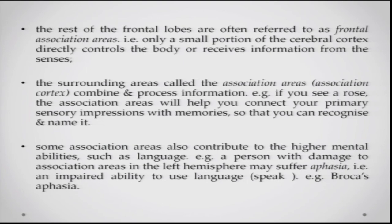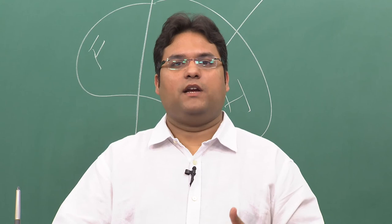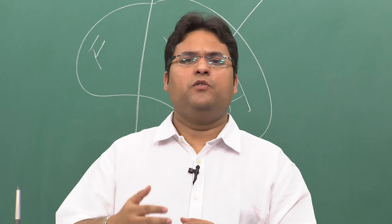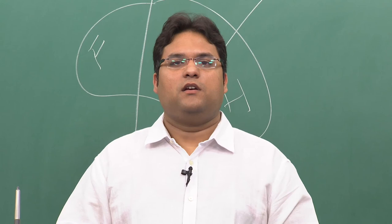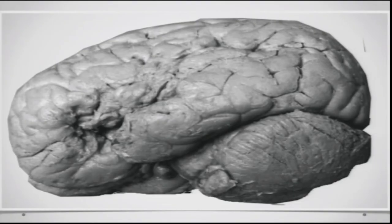Some association areas contribute to higher mental processes like language. Damage to association areas on the left hemisphere may lead to aphasia — an impaired ability to speak language. One kind is Broca's aphasia, where the person cannot produce normal speech; the speech is very halting and has ungrammatical sequences. This corresponds to damage in the frontal part of the brain known as Broca's area.